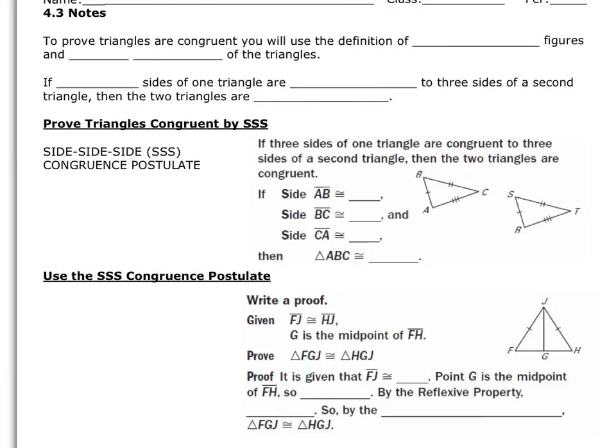Today we're going to start with proving triangles congruent. Previously we were told they were congruent and then we were allowed to line up corresponding pieces. Now they're going to ask: are they congruent, and if so, how or why? We're going to use the definition of congruent figures — congruent figures have sides and angles that are congruent.